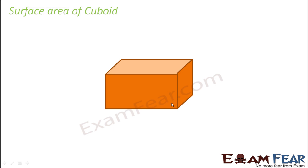Now we have to find the surface area of the cuboid. A cuboid has six surfaces and twelve edges, and all edges are perpendicular to each other.